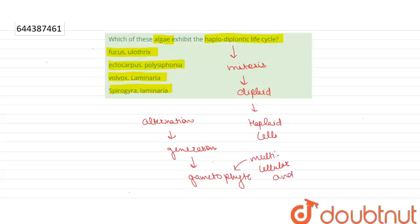And the sporophyte, on the other hand, are multicellular and diploid. This is the haplodiplontic life cycle.